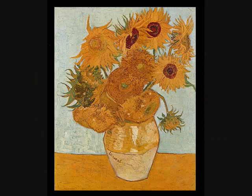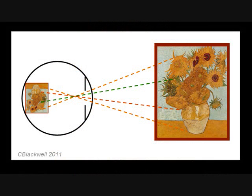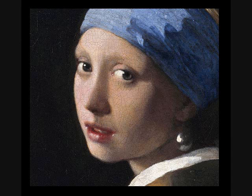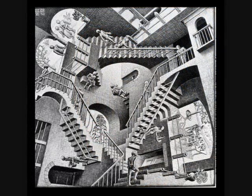Light is all around us, bouncing off objects in random directions. The eye gathers in those random light rays and focuses them into a sharp image on the retina. The eye is usually likened to a camera, but really it's more like a video camera, constantly registering new images and transmitting that information in the form of nerve impulses to the brain. The brain receives the nerve impulses and assembles them into an image, and then also has to make sense of what it sees.